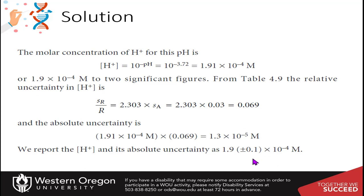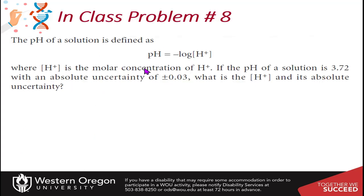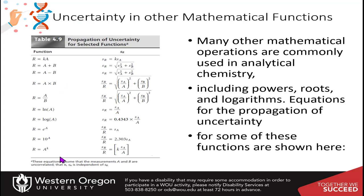Any time you calculate uncertainty, first rearrange your equation to solve for R — in this case the molar concentration of protons. That gives you the form of the equation you need to look up in the table, which then provides the correct formula for calculating uncertainty.